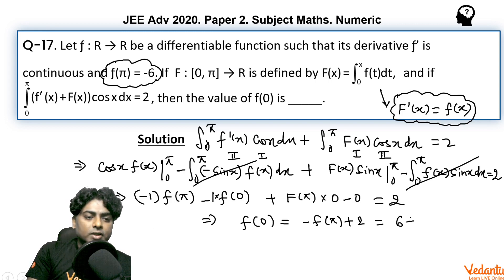Now the value of f(π) was given as -6, so we get 6 minus 2. The final answer to this question must be 4.